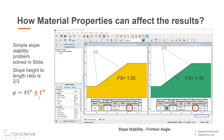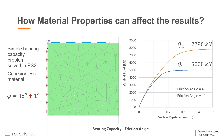That was just plus or minus 1 degree. For another example, let's look at a simple bearing capacity problem solved in RS2, looking at cohesionless material with only the friction angle varying — again plus or minus 1 degree around 45 degrees. If I have friction angle 44 degrees, the maximum axial load is 5000 kN. If I have 46 degrees, I'm getting close to 8000 kN. That is close to a 50 percent difference in bearing capacity from just plus or minus 1 degree.